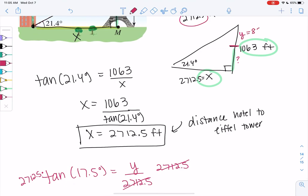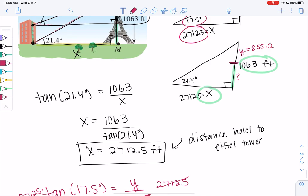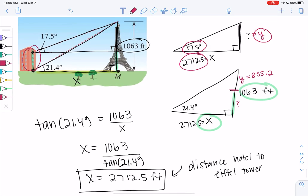That tells me the top half is 855.2. Then the height of the hotel would just be the difference.